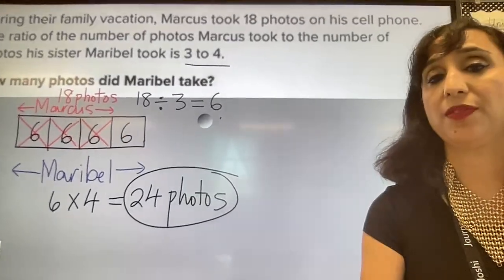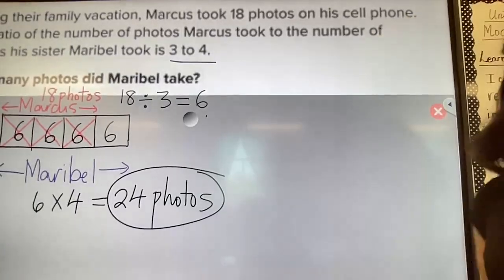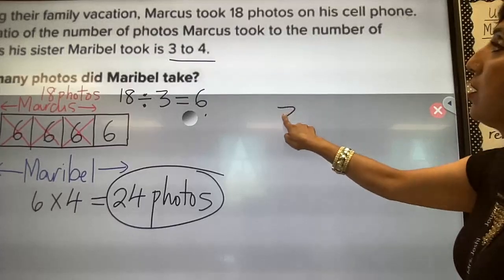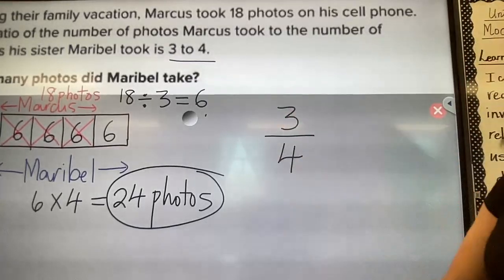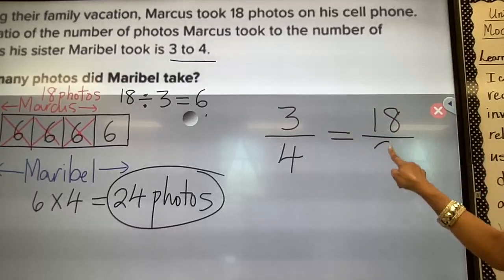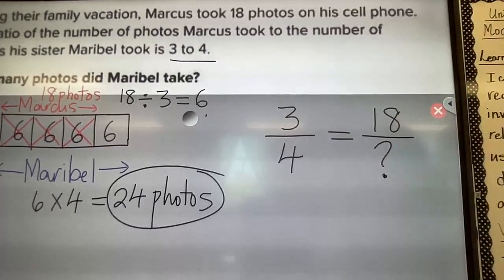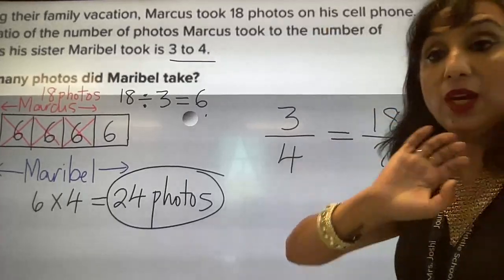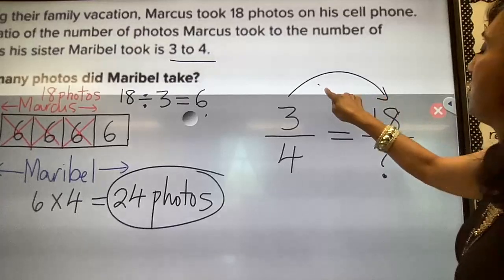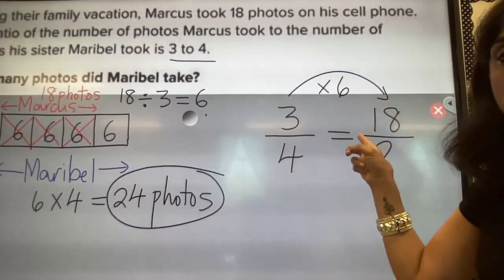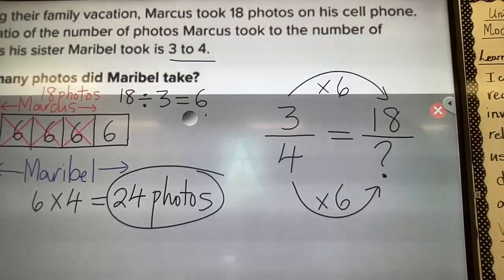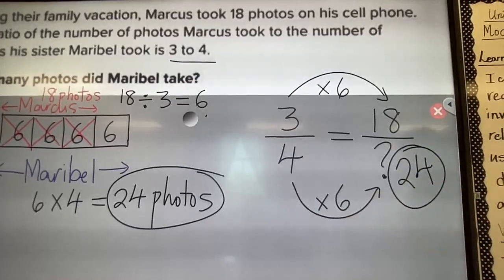Now using equivalent ratios: the ratio of Marcus to Maribel is 3 to 4, and Marcus took 18 photos. So 3 out of 4 equals 18 over what? Whatever I do to the numerator I do the same to the denominator. Since 3 times 6 gives me 18, I multiply the denominator by 6 as well: 4 times 6 equals 24 photos taken by Maribel — the same result.